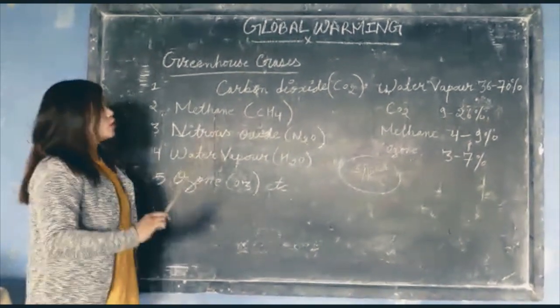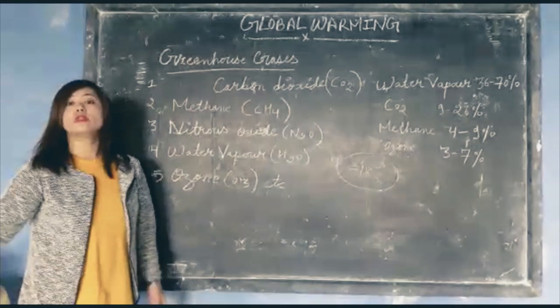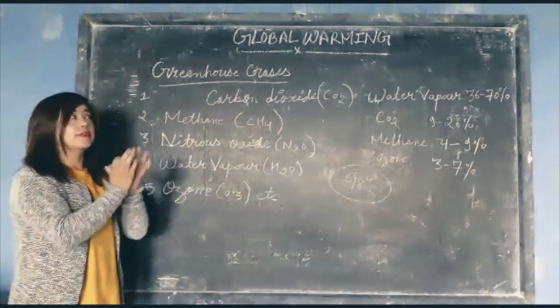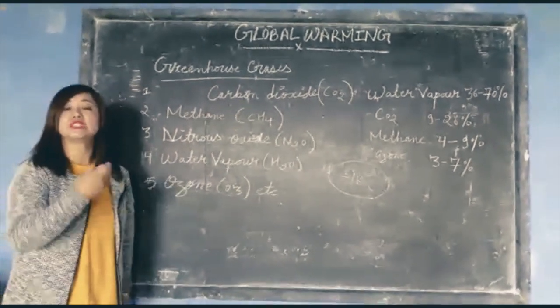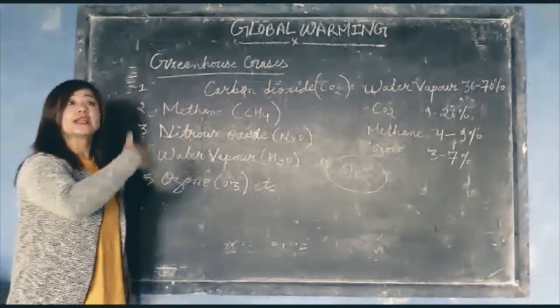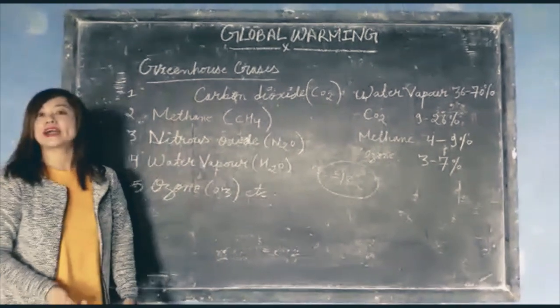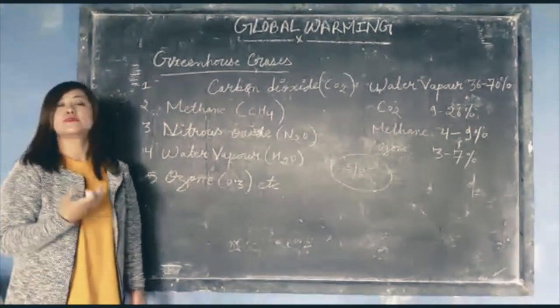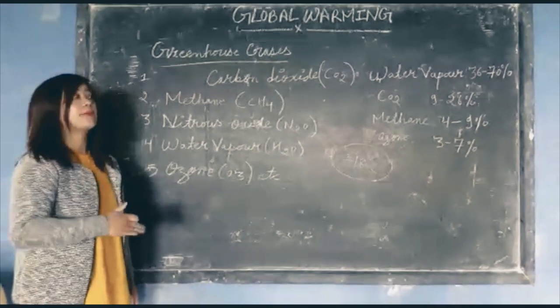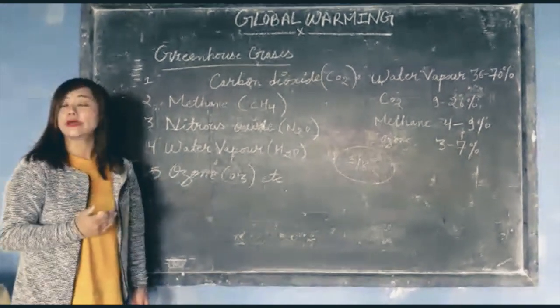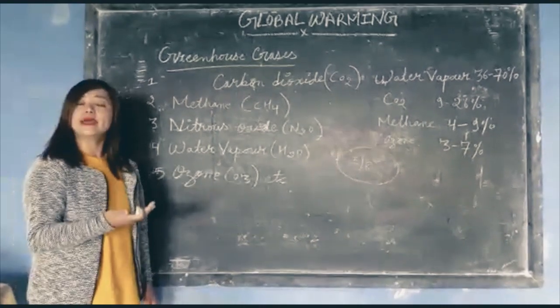But how? These greenhouse gases form like a trap around our earth. They trap some amount of heat from the sun and don't allow that heat to radiate back or go back into space. This process is known as the greenhouse effect. Through the greenhouse effect, the temperature of our earth is balanced or maintained.